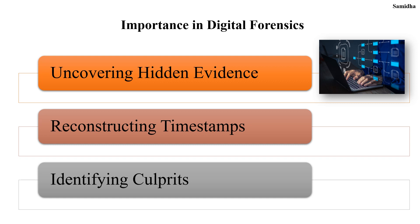Next is the importance of file system in digital forensics. File systems are important in solving cases which involve digital evidence. They help in recovering deleted files and also in reconstructing events. The three main points are uncovering hidden evidence, reconstructing timestamps and identifying culprits. Deleted files often leave traces behind, and different techniques are used to recover those fragments left on the storage device.